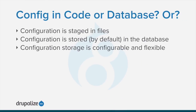It is a common misconception that the configuration system stores all configuration in code and not in a database. While default configuration is defined by modules in code, and during export and import operations configuration is staged in files, the active configuration storage is defined by the site and it's the database by default. However, the configuration system is flexible and configurable — switching to a file-based storage, MongoDB, Redis, or other key-value store are all technically possible.